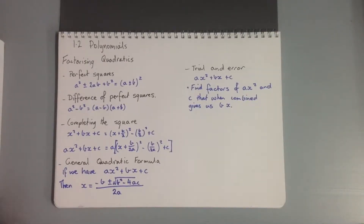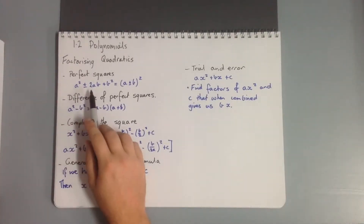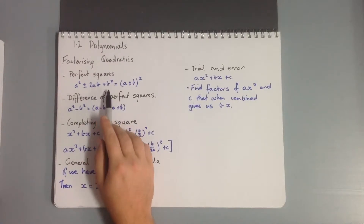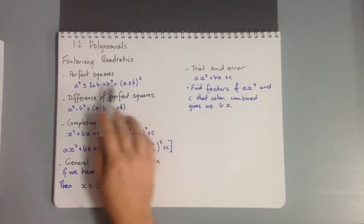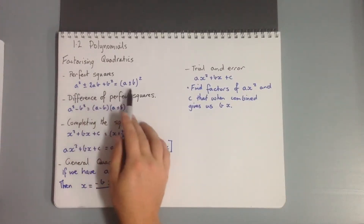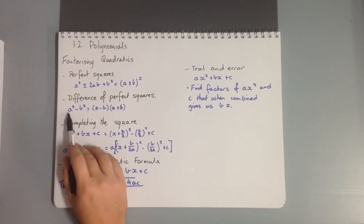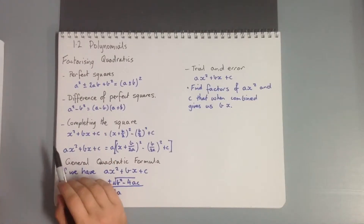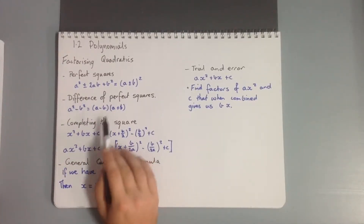As shown, we have perfect squares: if we have a² ± 2ab + b² then that can be factorized to (a ± b)². The second one is difference of two perfect squares, which is where we have a² - b² and that factorizes to (a - b)(a + b).